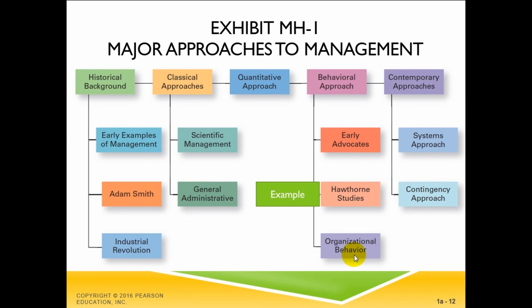The quantitative approach evolved from mathematical and statistical solutions developed for military problems during World War II to aid decision-making — in other words, using math and models when making any type of decision. Total quality management, or TQM, is an example of this approach. The behavioral approach focuses on the actions of people at work and how it affects their productivity and happiness. The contemporary approach focuses on the systems and contingency approaches. The systems approach says that an organization takes in inputs from the environment and transforms these resources into outputs distributed back into the environment. The contingency approach says that organizations are different, face different situations, and require different ways of managing.